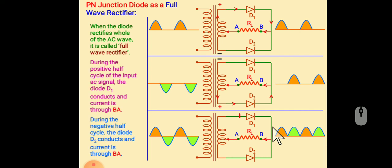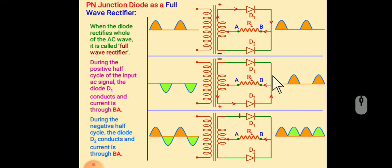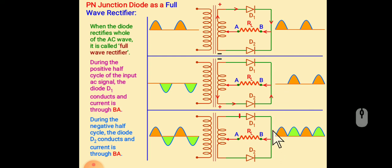So for positive half cycle, D1 becomes forward bias and we get the output. And for negative half cycle, D2 becomes forward bias and we get the output. And finally, the output becomes DC.